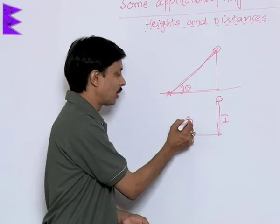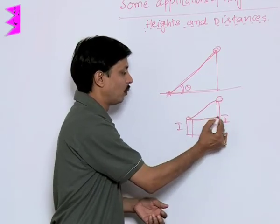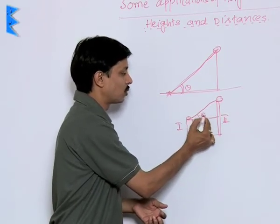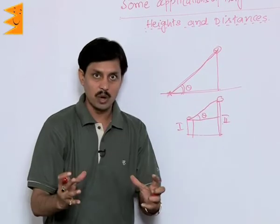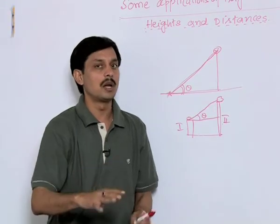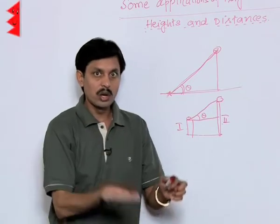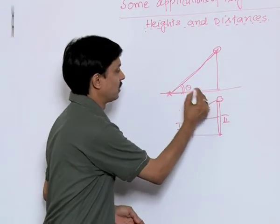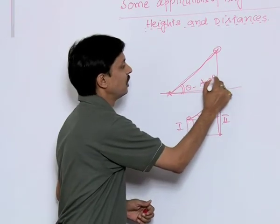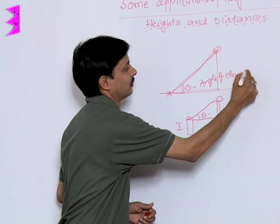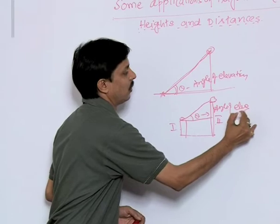You want to observe it from this place, then if you draw a line parallel to the base, this is also the angle of elevation. Angle of elevation forms when one observes anything from lower to upper, from lower to higher. This is known as the angle of elevation.